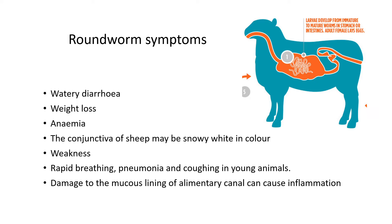Additional symptoms include rapid breathing, pneumonia where the lungs are affected, and sometimes coughing. The worms also damage the mucus lining of the alimentary canal, causing inflammation of the intestines, because roundworms enter through the stomach but eventually migrate to the intestines.